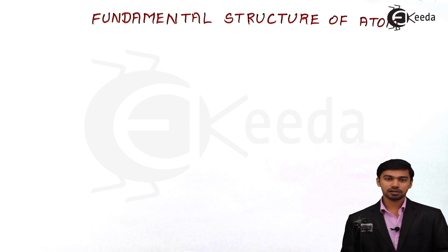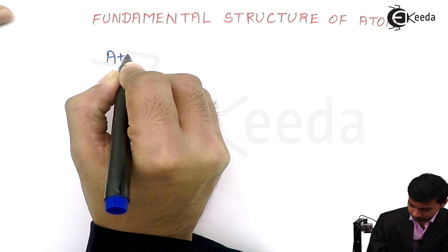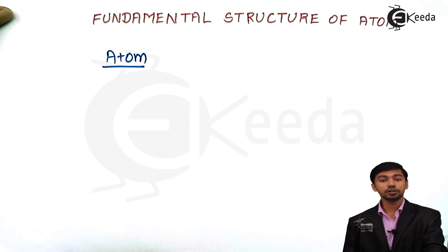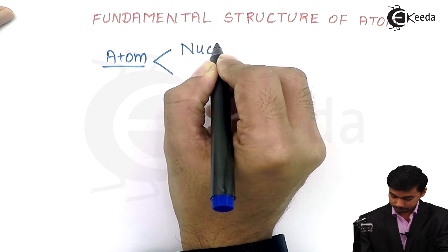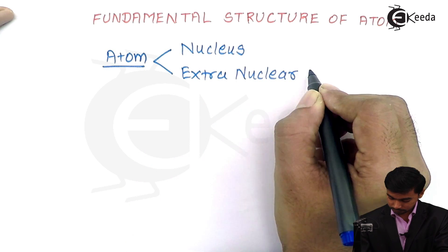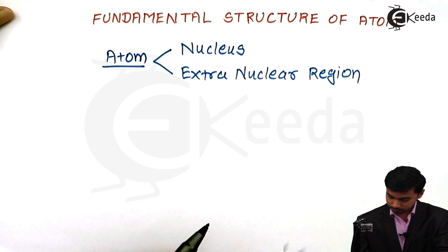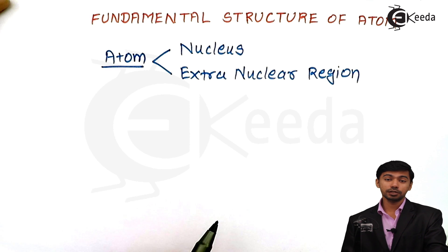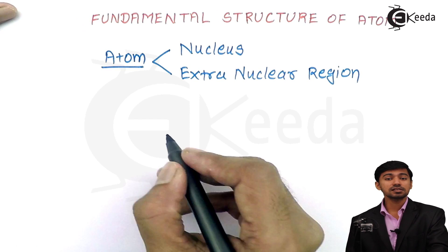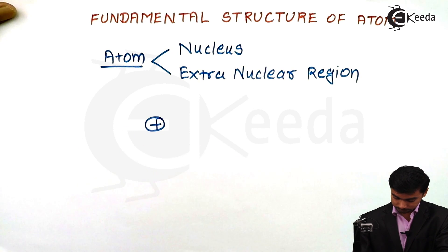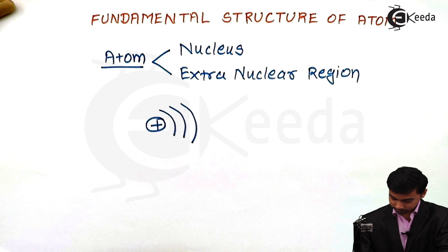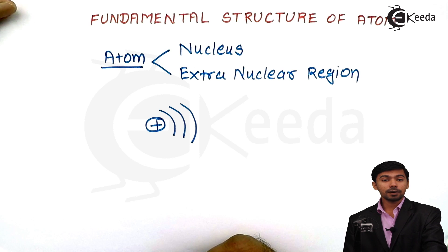According to Dalton, the atom is the smallest and indivisible — but actually it is divisible. Let us see how. This atom is going to divide into two parts: one is the nucleus and another one is the extra-nuclear region. The nucleus is the central part, and it is surrounded by the extra-nuclear region. These are the fundamental parts of an atom.